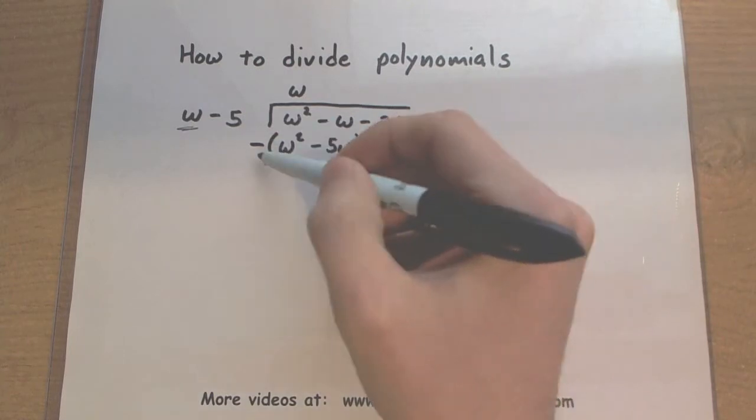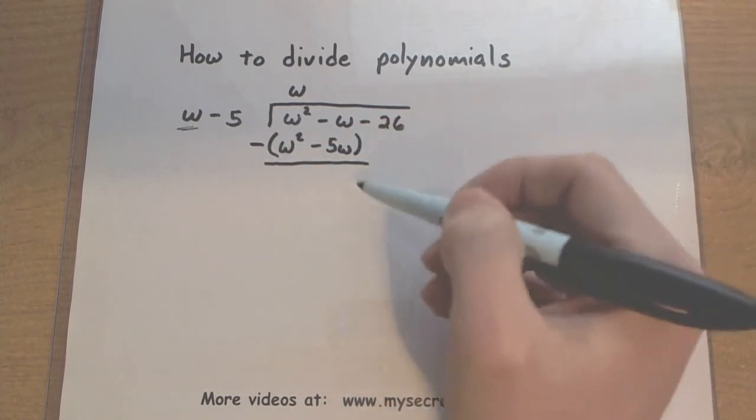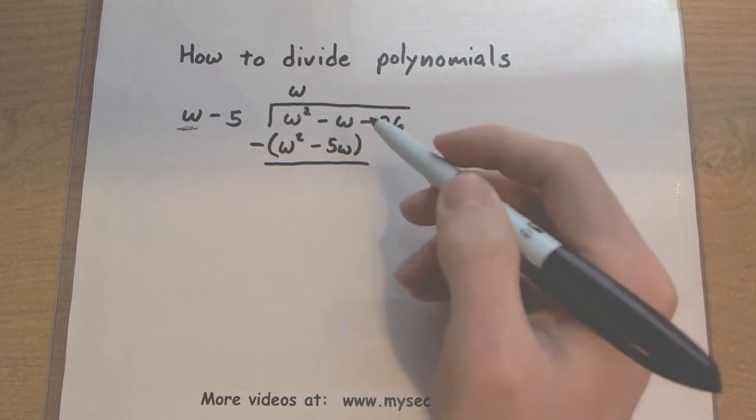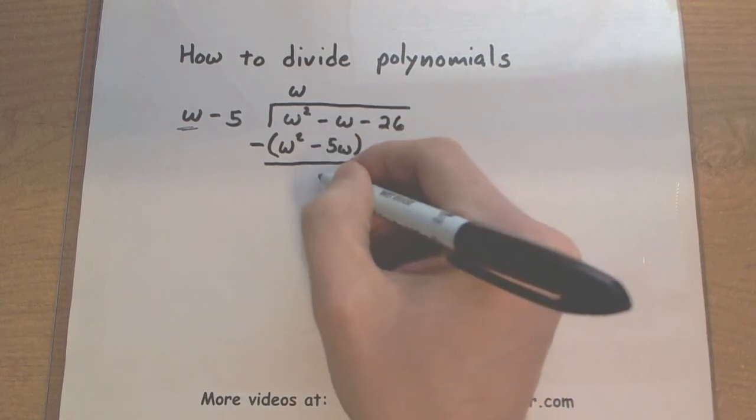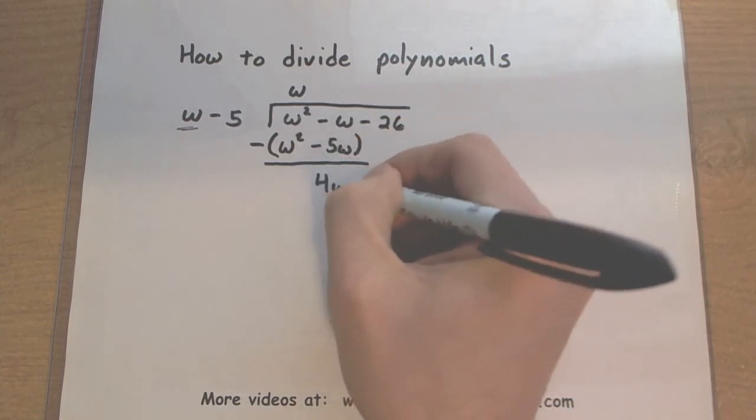Then here I have minus w minus a minus 5w. Well, let's see. I think that is actually a positive 4w.